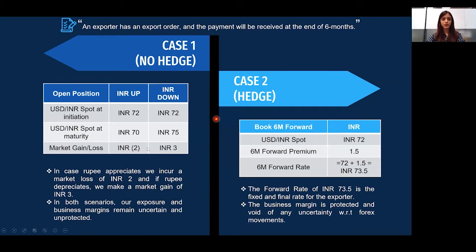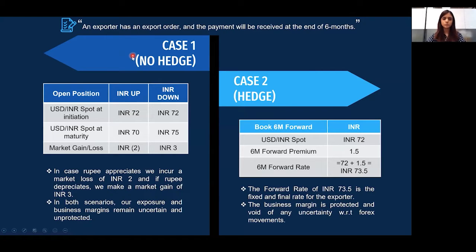For example, an exporter has an export receivable due in six months. The current spot rate is 72, hence costing and budgeting is done at 72. This is the minimum rate we would like to protect. In Case 1, we don't hedge and keep our positions open — that is, we convert our currency at the spot rate at maturity.